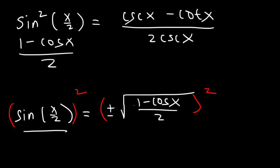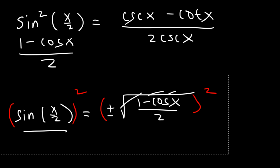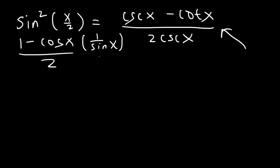Once we square it, the radical is going to disappear. So how can we convert 1 minus cosine over 2 into that? What we need to do is multiply the top and the bottom by 1 over sine x.